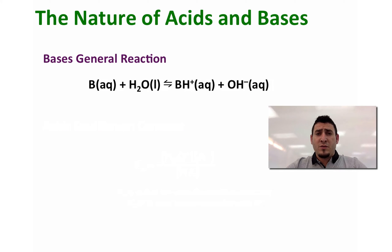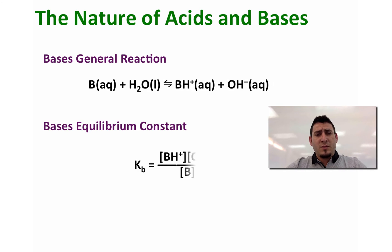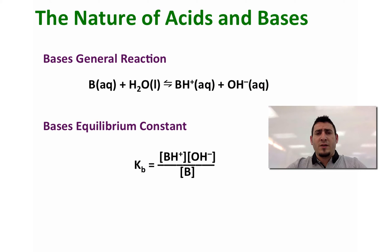The general reaction for bases is: B + H₂O → BH⁺ + OH⁻. The equilibrium constant for the reaction of the base with water is called Kb, and it equals the product of the concentrations of BH⁺ and OH⁻ divided by the concentration of the base.